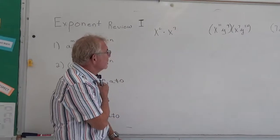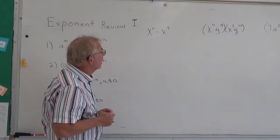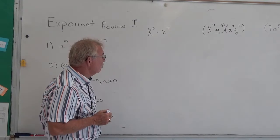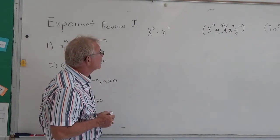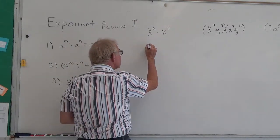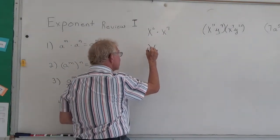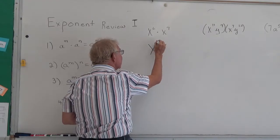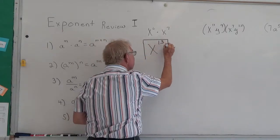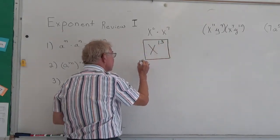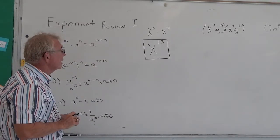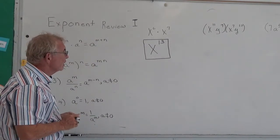X to the sixth times x to the seventh. Okay, they have the same base x, and if you look at rule one, rule one says you add the exponents. So this would be x, and you add 6 plus 7 and get 13. So rule one states if you have the same base of x, you add the exponents, 6 plus 7.